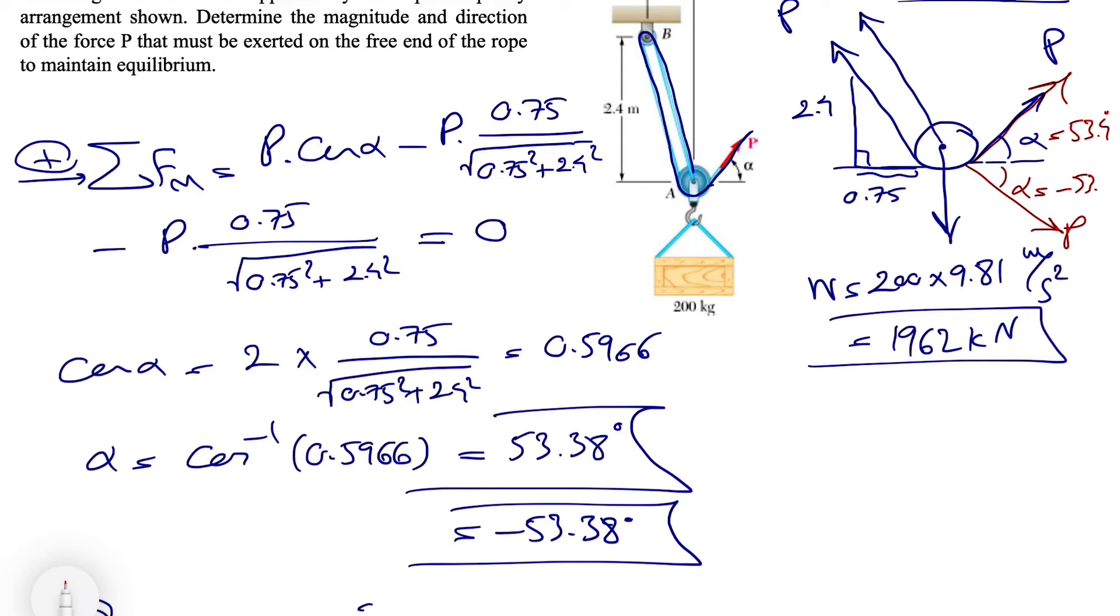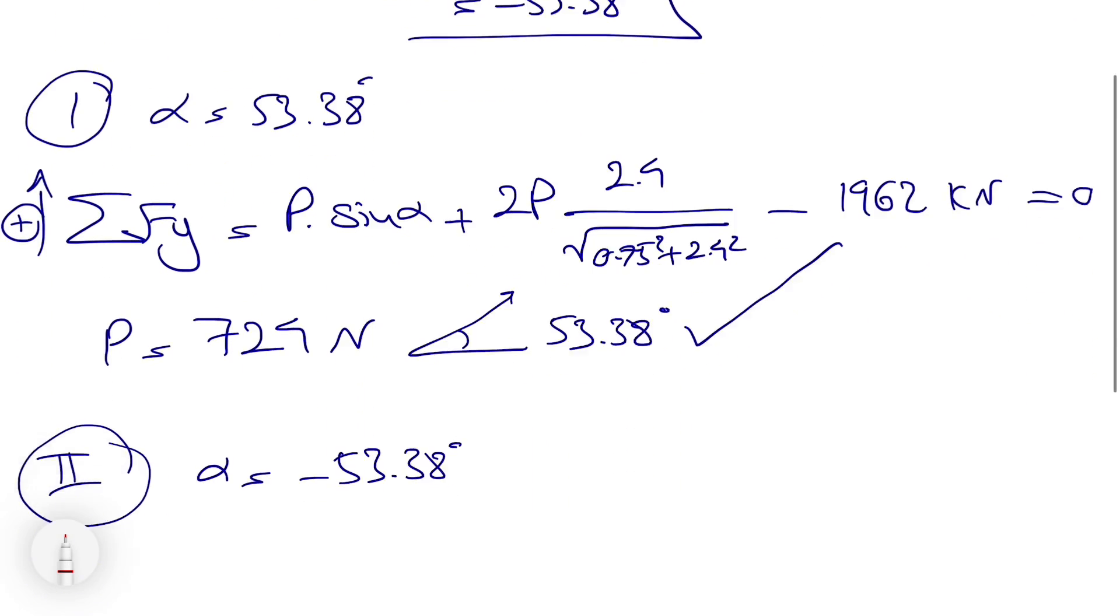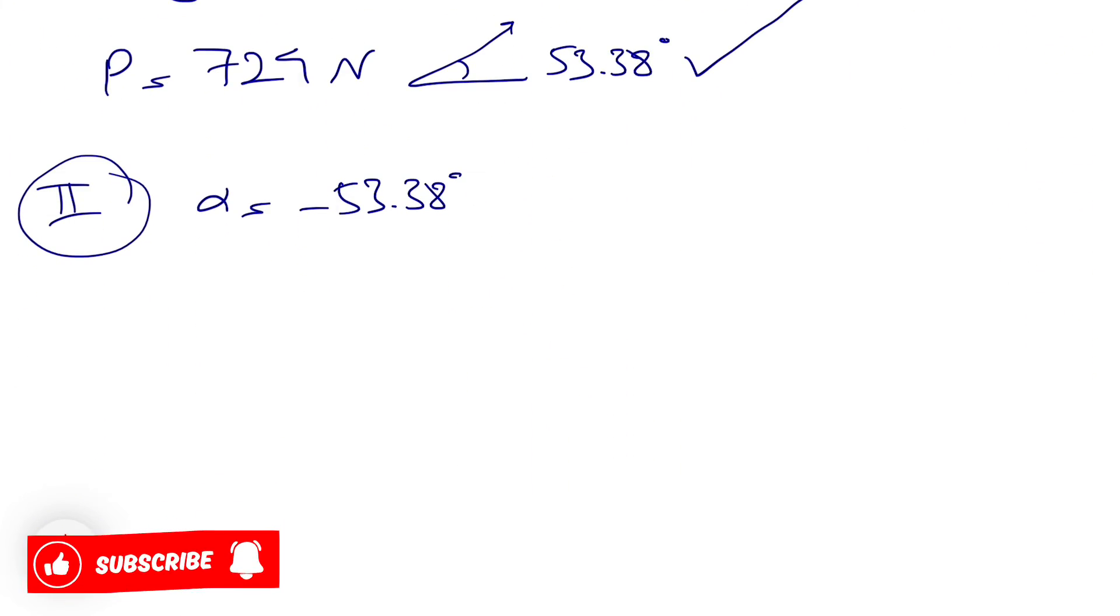There is another scenario that this can be also another P to keep the system in equilibrium. So that was the first part, and now we are moving to the second condition.